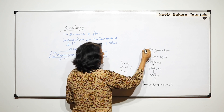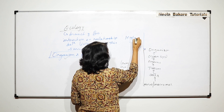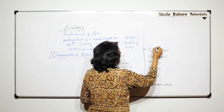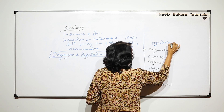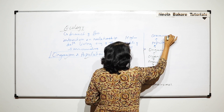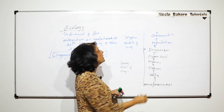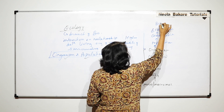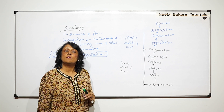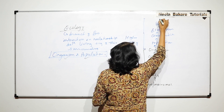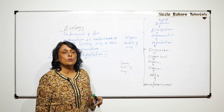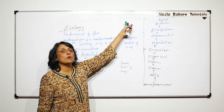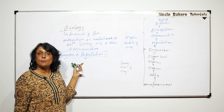Beyond organism, if we go further, we'll be talking about the higher levels of organization. Organisms of a particular species would make the population; populations together would form the communities; these communities with the abiotic factors would form the ecosystems; larger ecosystems will form the biomes; and all these biomes together will form the biosphere. In this unit we will mainly be focusing on the higher level of organization.